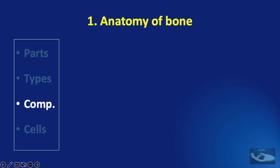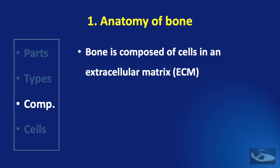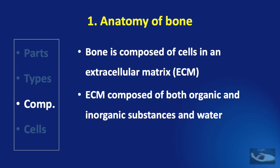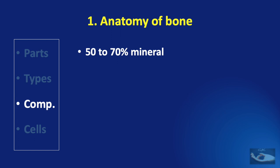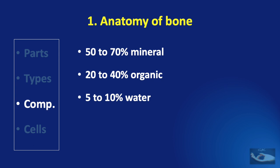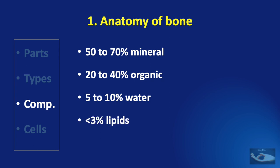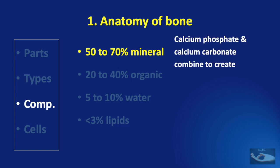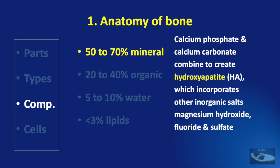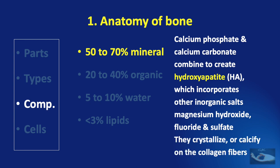What is bone actually composed of? It is composed of cells in an extracellular matrix. This extracellular matrix is composed of organic and inorganic substances in water: 50 to 70% is mineral, 20 to 40% is organic, 5 to 10% is water, and less than 3% consists of lipids. The mineral or inorganic content consists of calcium phosphate and calcium carbonate which combine to create hydroxyapatite — the main component of inorganic substances in bone. Other inorganic salts like magnesium hydroxide, fluoride, and sulphate are further incorporated. All these inorganic substances crystallize or calcify on the collagen fibers.